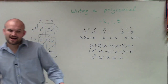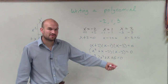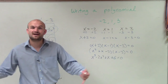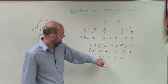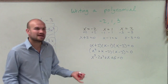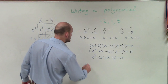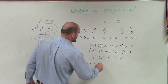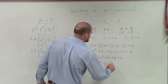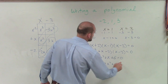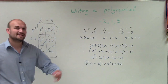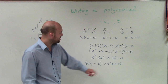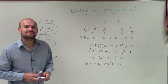So we have our polynomial function equal to 0. But remember, we're not trying to write a polynomial that's equal to 0 — we want to find the actual function. We have our input as x, so we'll call it f of x. Our final answer is f of x equals x cubed minus 2x squared plus x plus 6. We only set it equal to 0 to find the zeros; we're really just finding the polynomial. There's your final answer.